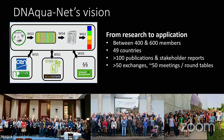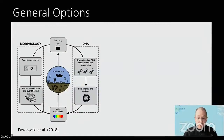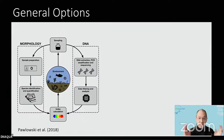The general options when we talk about DNA-based methods for bioassessments are twofold. It all starts with sampling — either a water sample, a macroinvertebrate sample, or a phytobenthos sample. Instead of identifying samples using traditional methods and keys, you sequence them and bioinformatically process them, and in the end you also get an index.